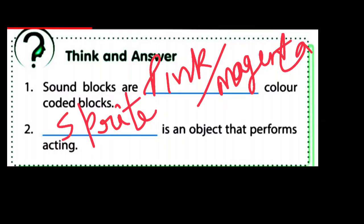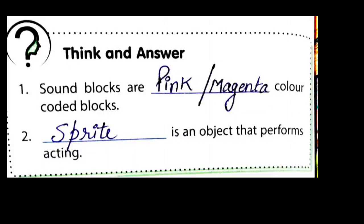These are the answers of the previous slide, students. Sound blocks are pink and magenta color coded blocks. Sprite is an object that performs acting. So write down these answers in your computer textbook — aap ye answer apne computer textbook mein likhiye, page number 38 par. Sprite ek object hota hai jo acting perform karta hai.